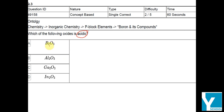Boron, aluminium, gallium, and indium all belong to a single group — the boron family. Metallic character increases down the group, which means acidic character decreases down the group. So which oxide is the most acidic? It would be the one at the top of the group.